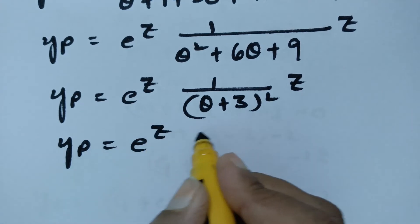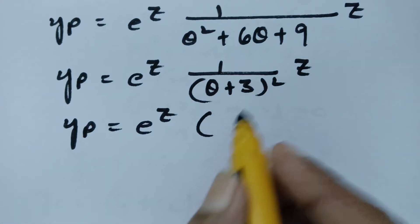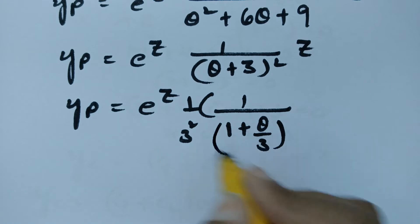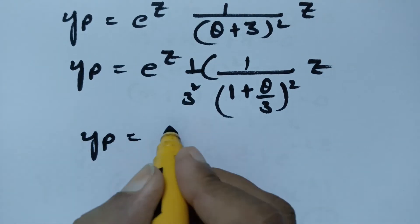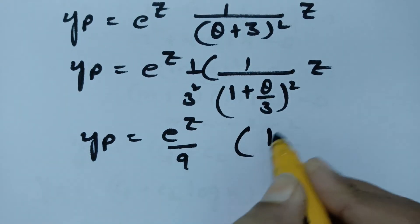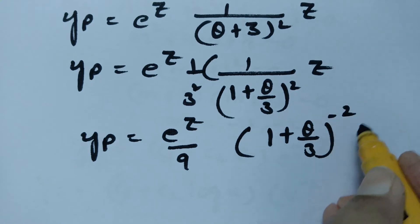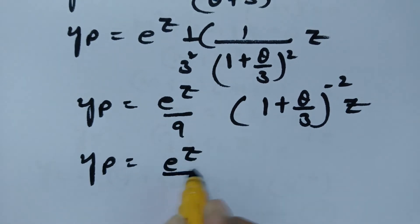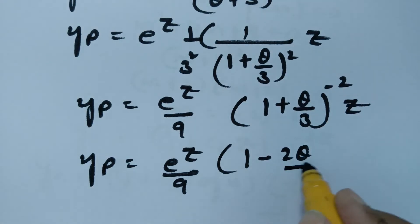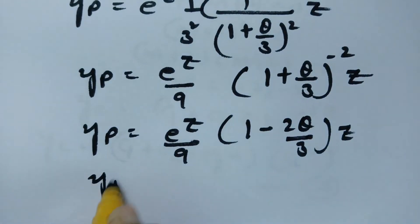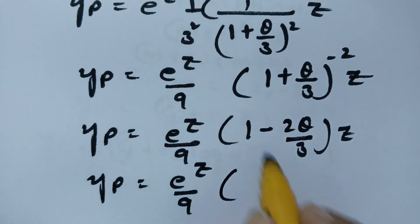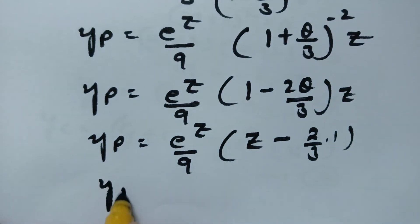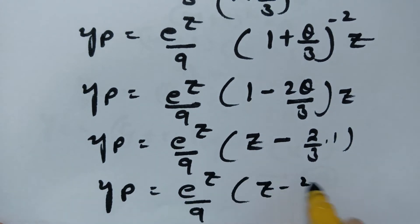Taking 3 squared as common, yp equals e to the power z divided by 9 times (1 plus theta over 3) to the power of negative 2 times z. Expanding to first order: (1 minus 2 times theta over 3) times z. Multiplying: z minus (2 over 3) times the derivative of z. Since the derivative of z is 1, yp equals e to the power z over 9 times (z minus 2 over 3).